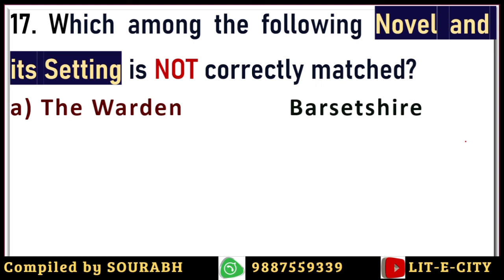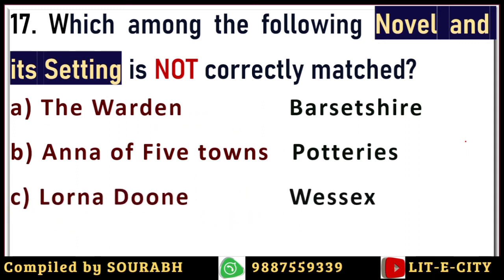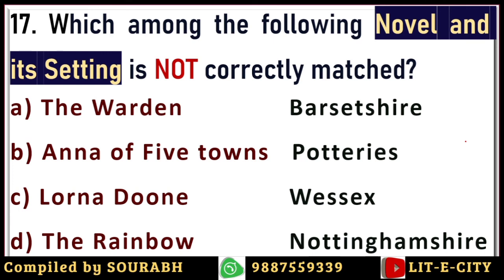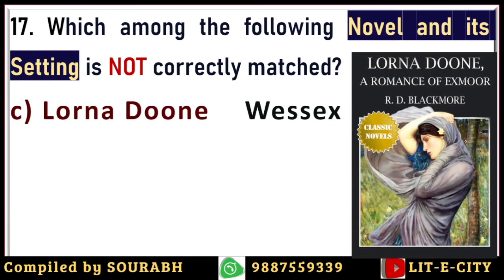Next question: which among the following novel-setting pairings is not correctly matched? Options are: The Warden set in Barsetshire (Trollope), Anna of the Five Towns set in the Potteries (Arnold Bennett), Lorna Doone set in Wessex (Blackmore), and The Rainbow set in Nottinghamshire (D.H. Lawrence). Some of these are actual locations and some fictional. The correct answer is Lorna Doone by R.D. Blackmore, which is actually located at Exmoor — not Wessex, which is the region where Thomas Hardy set almost all of his novels.